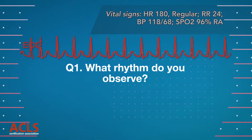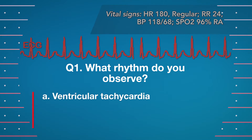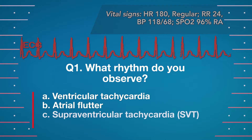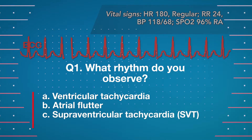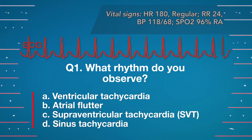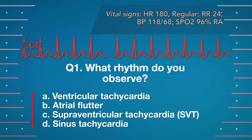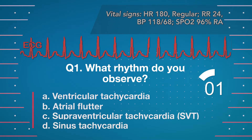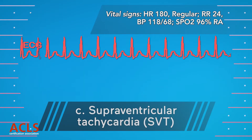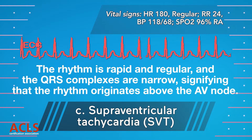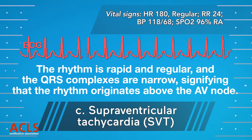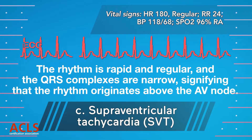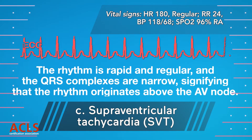Which rhythm is this? This is supraventricular tachycardia, SVT. The rhythm is rapid and regular and the QRS complexes are narrow, signifying that the rhythm is originating above the AV node.